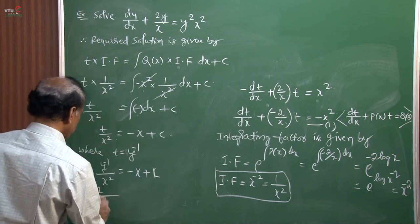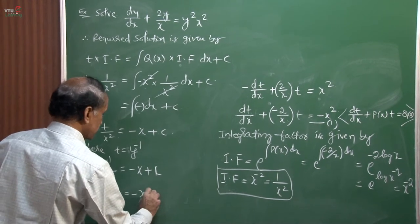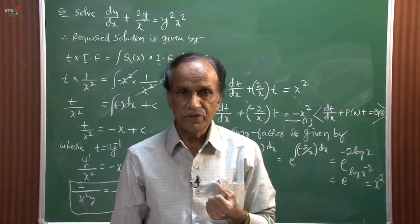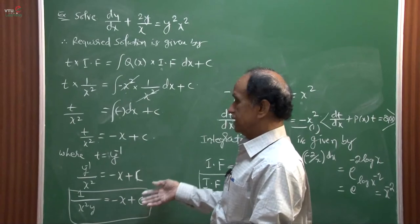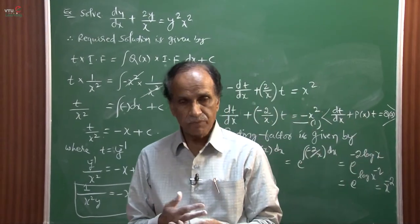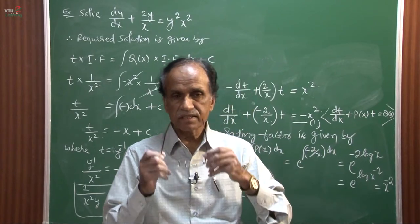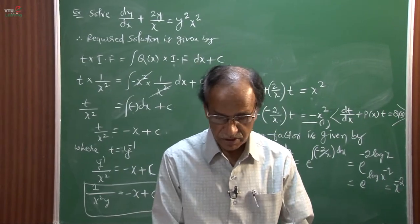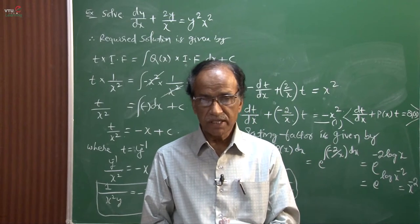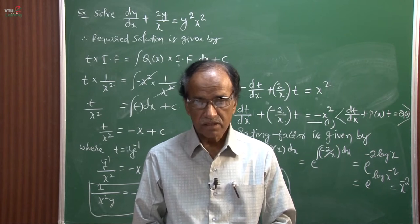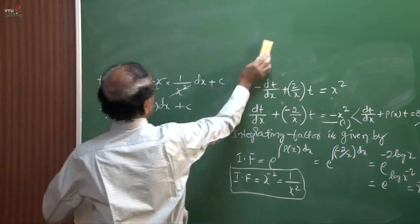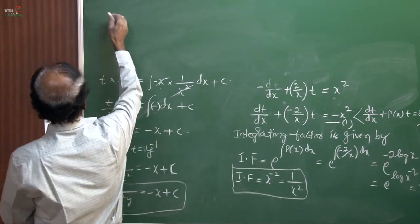This is the final answer of the Bernoulli differential equation. We declared it was non-linear, reduced it to linear, calculated the integrating factor by choosing a new dependent variable t in place of y^(-1), and wrote the solution. Now I shall take another example of the opposite type, where the product y·dy appears.